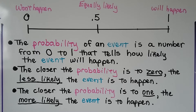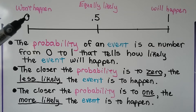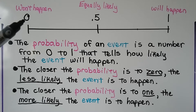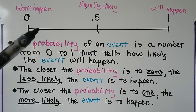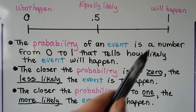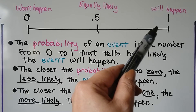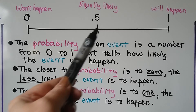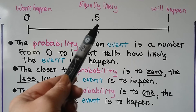The probability of an event is a number from zero to one that tells how likely the event will happen. The closer the probability is to zero, the less likely the event is to happen — you have a zero chance or a 10% chance. The closer the probability is to one, the more likely the event is to happen — so you could have a 0.9, like a 90% chance. It could also be in the middle and you'd have a 50-50 chance.